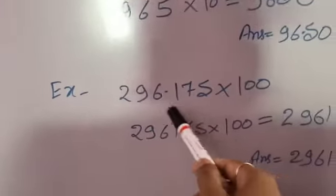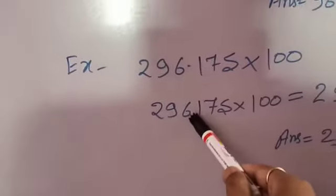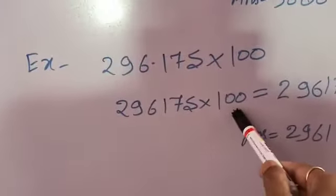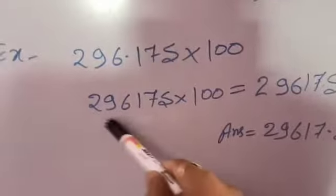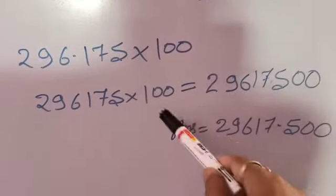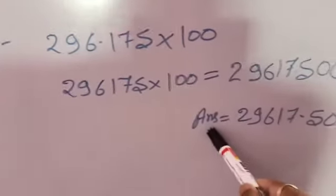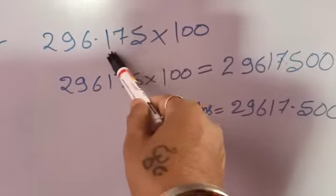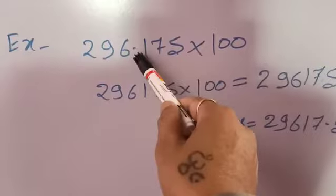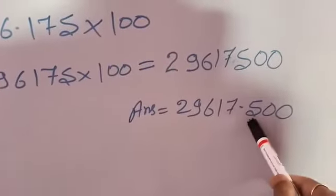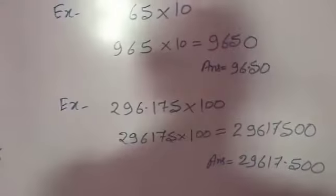In the second example, the number is 296.175 multiplied by 100. First we write the number without the decimal and multiply by 100. We increase by two zeros since we are multiplying by 100. When we write the final answer, we put the decimal after three digits, because in the multiplicand the decimal is given after three digits — 1, 2, 3 — so we write the decimal after three digits.